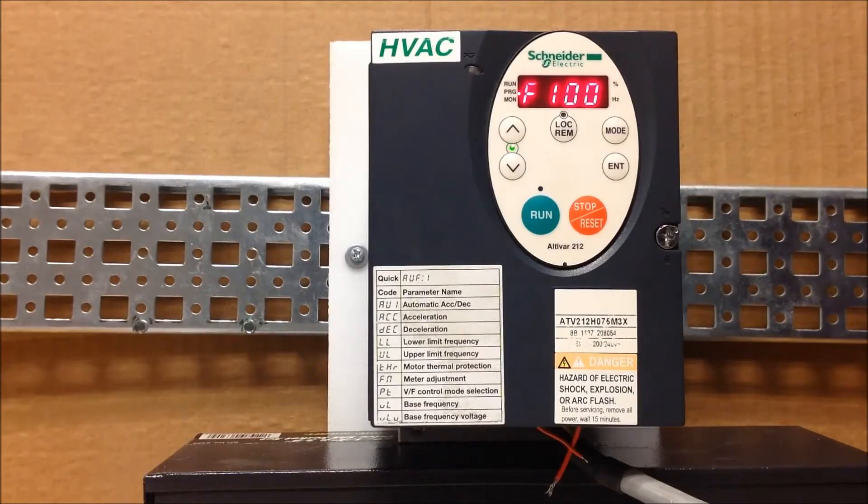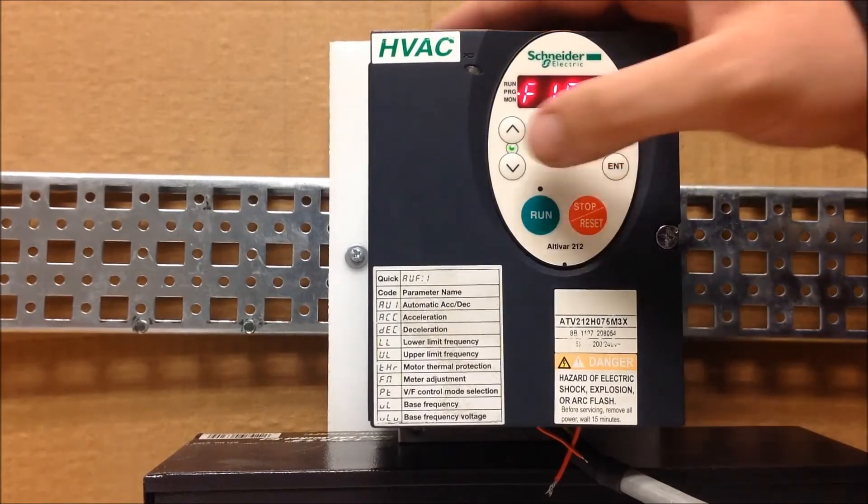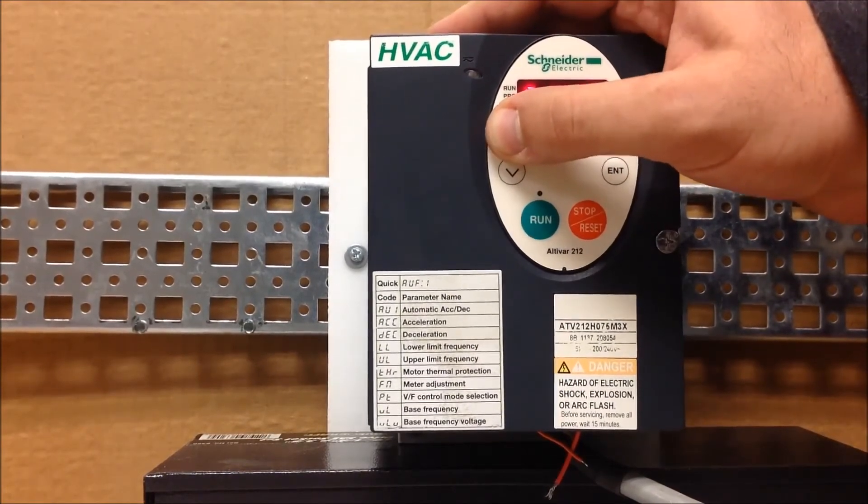As we mentioned before, we're going to go ahead and program the F112 parameter which is your R terminal as a reference switching function. You can also choose F113 for the RES terminal, up to you. You want to go ahead and set the F112 function to a 38 value.